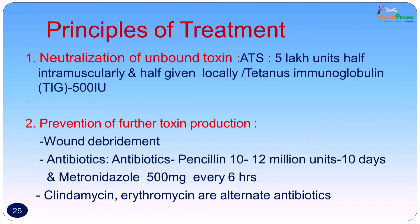The basic principles of treatment are essentially neutralization of unbound toxin — you cannot neutralize toxin which has already been bound. ATS 5 lakh units — half intramuscularly and half locally — is given. This can also be replaced by tetanus immunoglobulin, which is made in human beings. The ATS or anti-tetanic serum is of equine origin and is likely to give anaphylaxis. Tetanus immunoglobulin of human origin is preferred; only 500 international units are required and it does not give anaphylaxis.